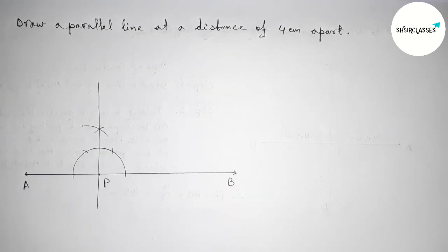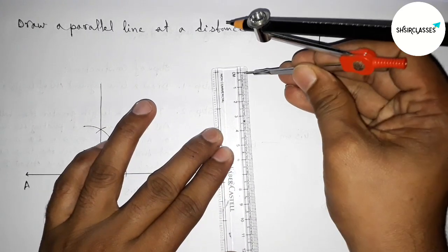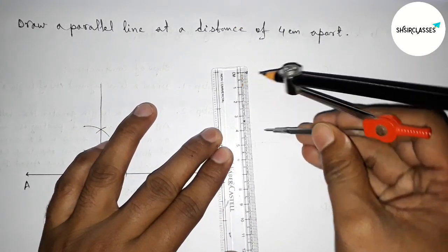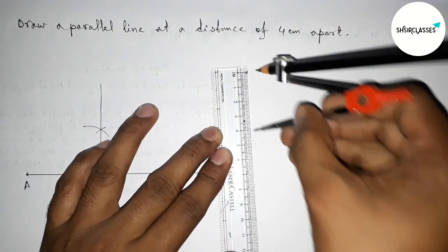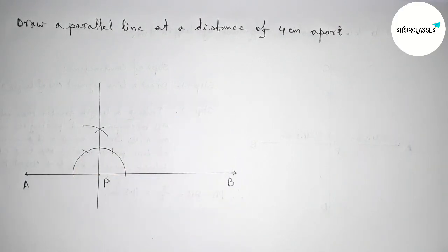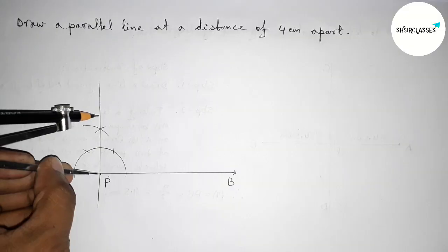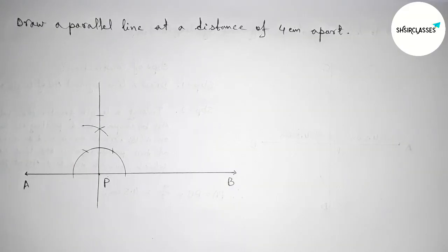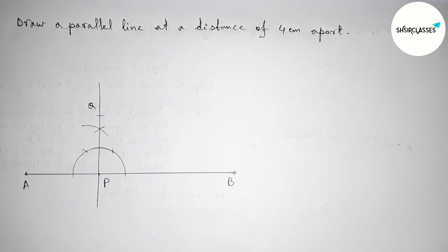Next we have to take 4 centimeter length with the help of scale and compass. So this is 1, 2, 3, 4 — this is 4 centimeter length. Putting the compass on the point P and cutting here. Now taking here point Q, so PQ equals 4 centimeters.